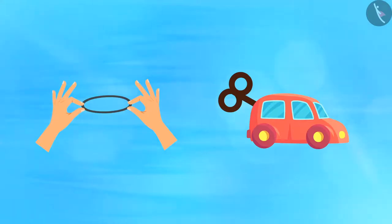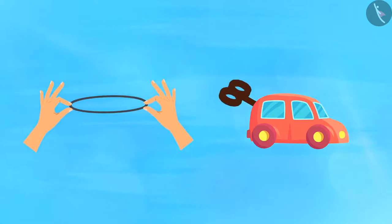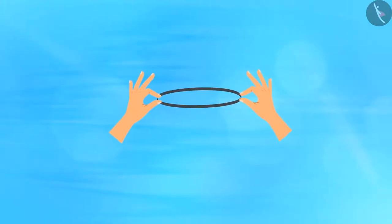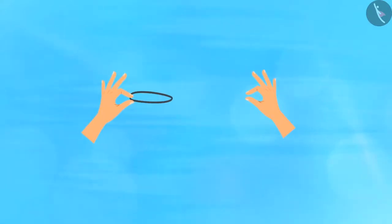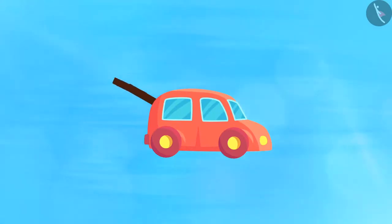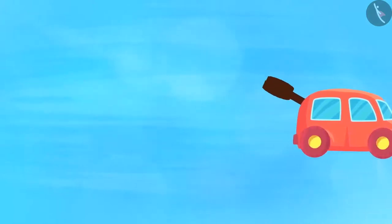You transfer energy when you stretch the rubber band or wind up the key of the toy car. When you stretch the rubber band, the work done by you in stretching it is stored in it as potential energy. And when you wind up the key in the toy car, which compresses the spring inside it, the work done in compressing the spring is stored as its potential energy.